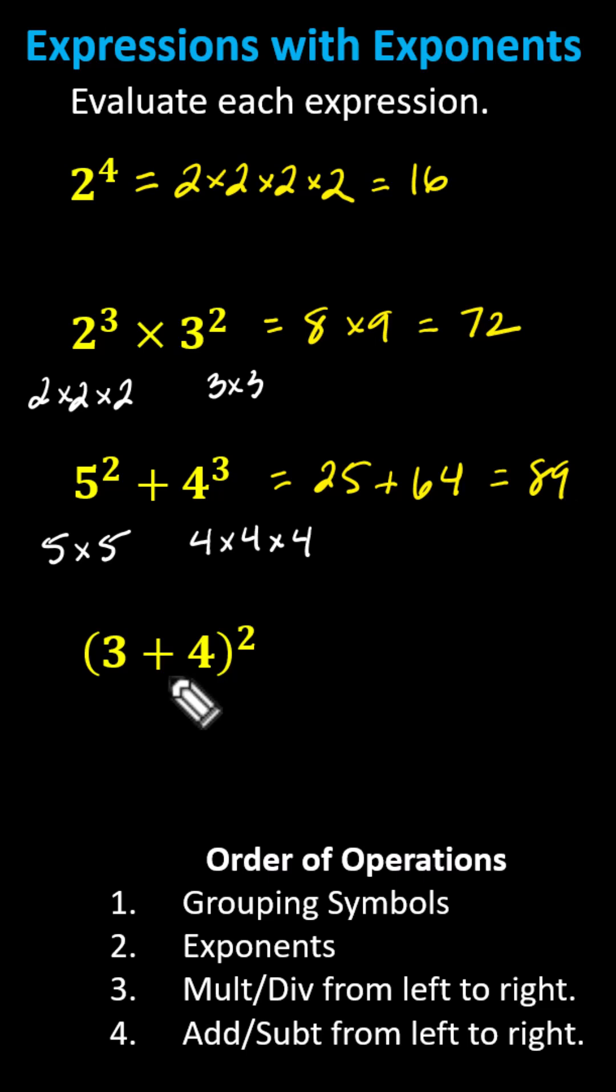For the last example, we have (3+4)^2. Following the order of operations, the first step is to simplify inside the parentheses: 3 + 4 = 7. The expression simplifies to 7^2, which equals 7×7 = 49. I hope you found this helpful.